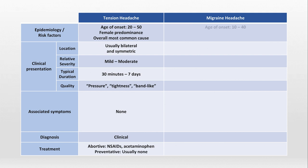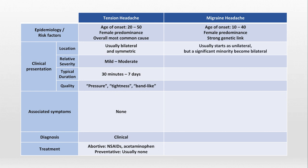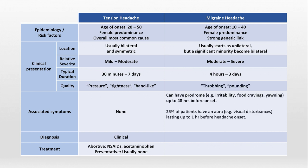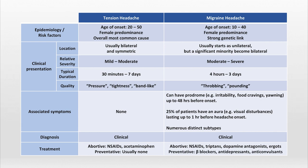For migraine headaches, the age of onset is typically 10 to 40, also with a female predominance and a strong genetic link. They usually start as unilateral but can become bilateral. The pain is relatively moderate to severe, lasting 4 hours to 3 days, and is most often described as throbbing or pounding. Migraines are associated with prodromes and auras and have numerous distinct subtypes. It's also a clinical diagnosis. Abortive treatments include NSAIDs, triptans, dopamine antagonists, and ergots, while preventative treatments include beta blockers, antidepressants, and anticonvulsants.